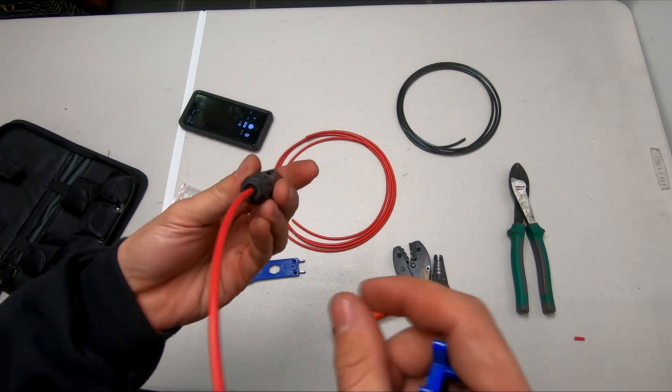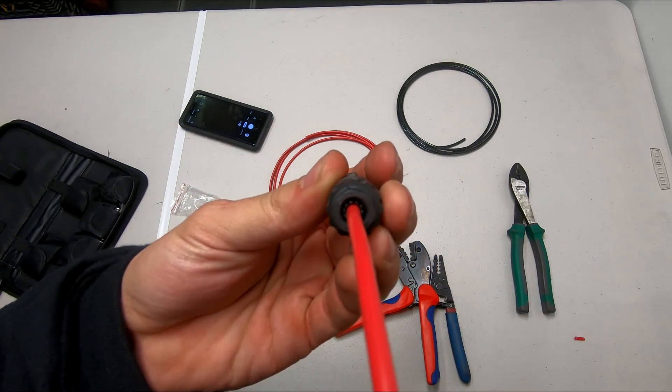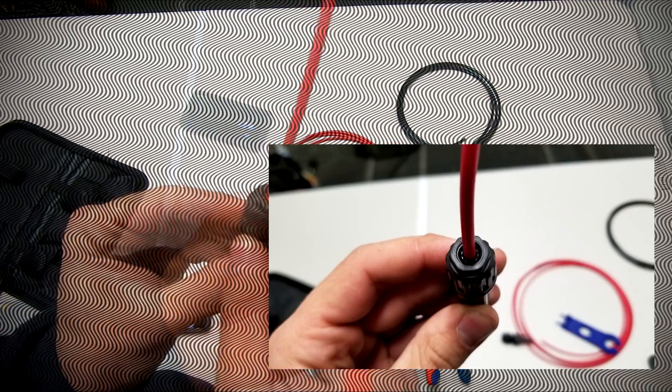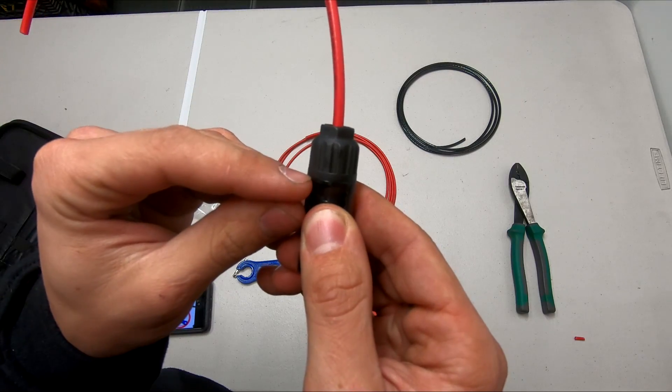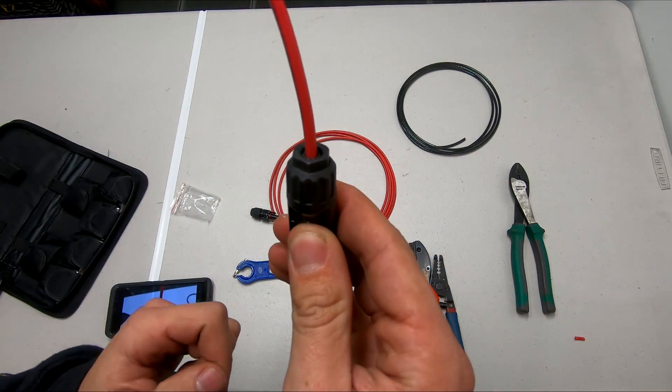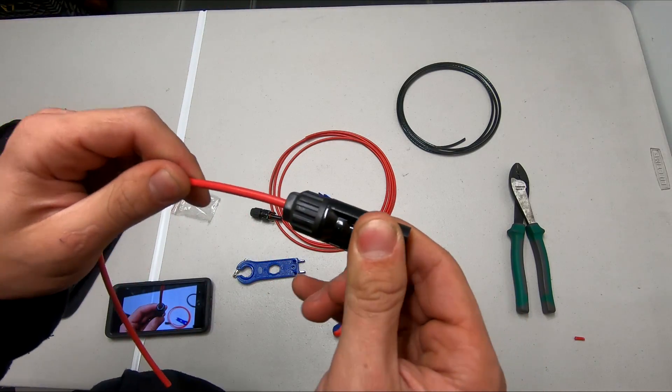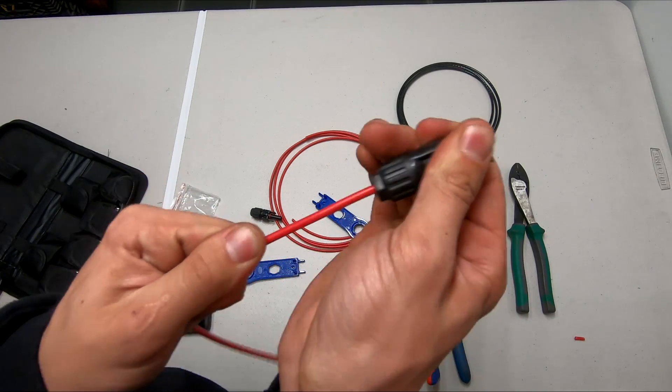Now in this case I use regular THHN wire and as you can see the back closed up. If you were using PV wire this would not tighten down all the way until it's closed. It would be slightly more open.